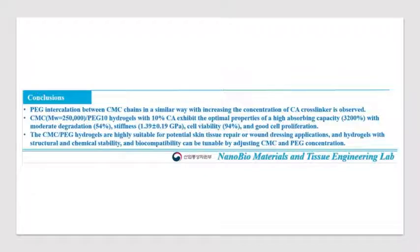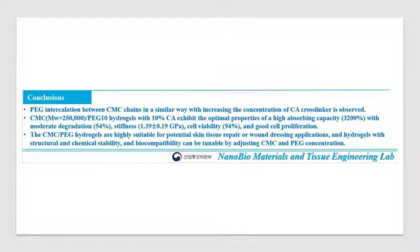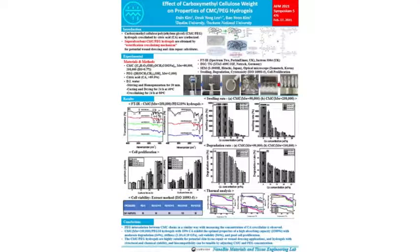CMC/CA 10% hydrogel with molecular weight of 250,000 shows a high swelling capacity of 3,200%, moderate degradation of 50–54%, good stiffness of 1.39 GPa, cell viability of 94%, and good cell proliferation. CMC and PEG hydrogel are structurally and chemically stable, making them very suitable for potential skin tissue repair and wound dressing applications. This is the end of the presentation.